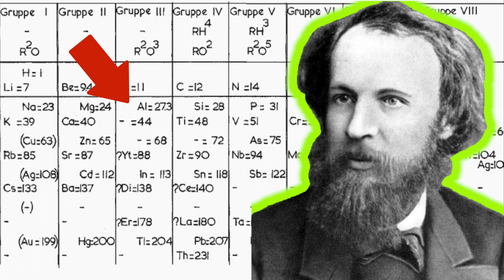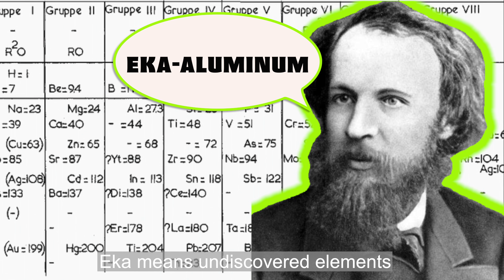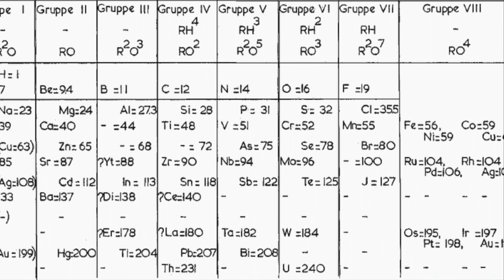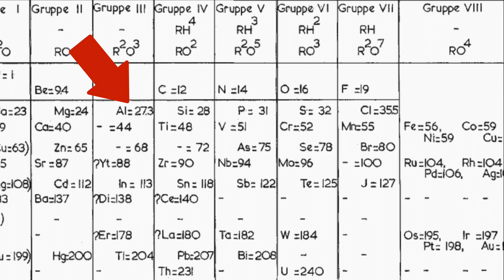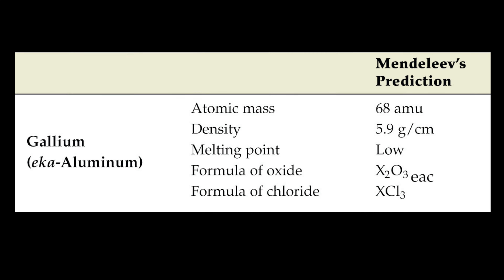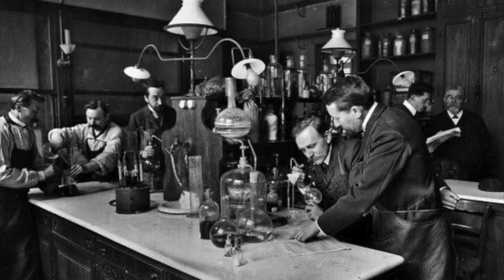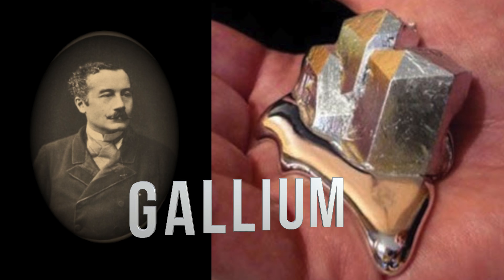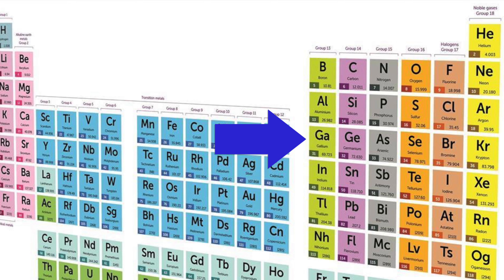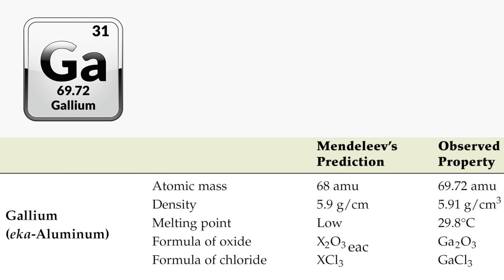For example, he predicted an element in row 5 of group 3, which he named eka-aluminium. Eka means undiscovered element, and he gave this name because it lies below aluminum in the periodic table. He predicted that this missing element would have an atomic mass of 68 and be a relatively soft metal like other elements in that group. Scientists searched for it and found it just a few years later — French chemist Paul-Émile Lecoq de Boisbaudran discovered it and named the new element gallium, which sits one step away from aluminum in the periodic table. Mendeleev's predictions about the properties of this element were also spot-on.